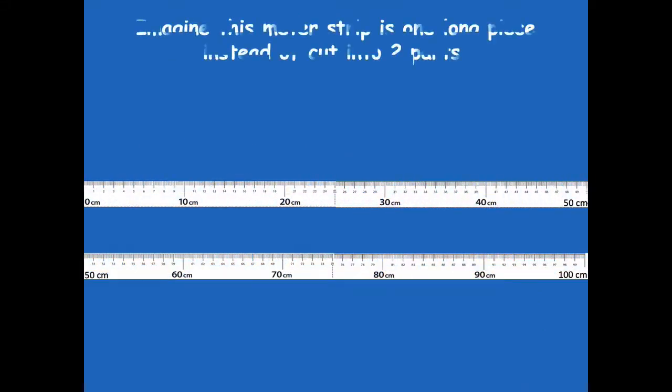All right, friends. Imagine this meter strip is one long piece instead of cut into two parts. I had to cut it because otherwise it wouldn't fit on the screen. So just imagine that instead of the first one stopping at 50, it keeps going all the way to 100 — we had to snip it into two parts so we could see it.